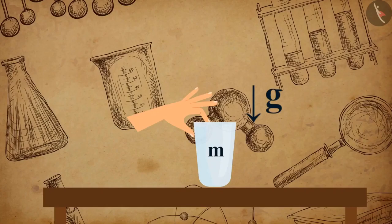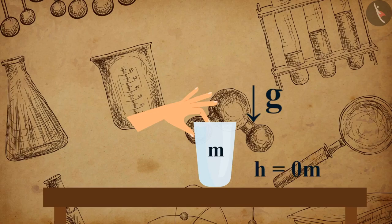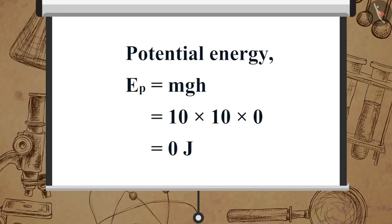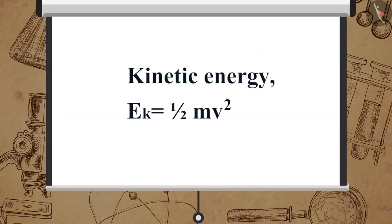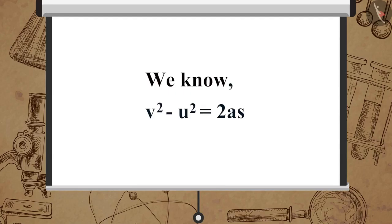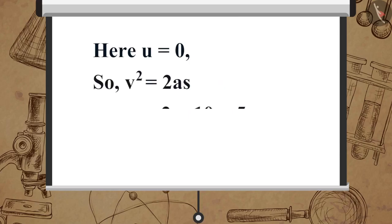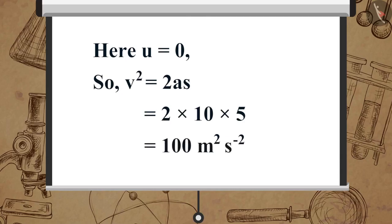Now let us calculate the potential energy, kinetic energy, and total mechanical energy of the object when it reaches the ground, so H = 0 m. Potential energy: EP = MgH = 10 × 10 × 0 = 0 J. For kinetic energy, we use v² − u² = 2as. Here u = 0, therefore v² = 2as = 2 × 10 × 5 = 100 m²/s².